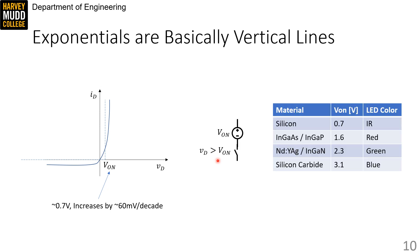One aside that I love mentioning is that the value of VON depends on the material used to make diodes. Silicon diodes, which emit IR light if they're used as LEDs, have an on voltage of about 0.7 volts. Indium gallium arsenide phosphide alloys, which are used for red LEDs, have 1.6 volt on voltages.